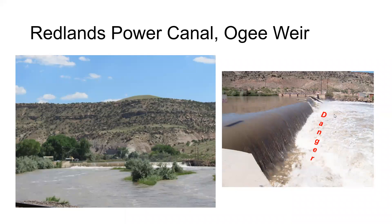When we have low-head dams that have been installed in the past and are no longer in use, oftentimes people are trying to get them out. Not only are they a hazard for swimmers — they can kill people — but they also block fish passage. In this particular case, there's a fish ladder and screen that allows fish to pass through the structure. Without that, fish aren't able to swim upstream, and native species that travel up and down the river aren't able to pass. We do have a program for retrofitting the structure.